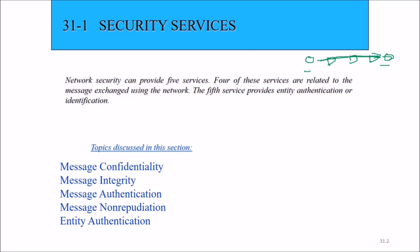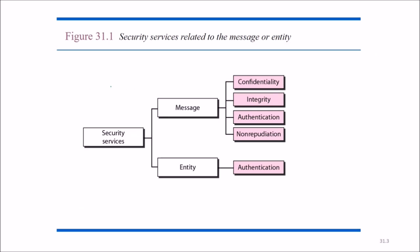Network security comprises various services which ensure how to verify or arrange that this content is not available to anyone. And even if it is available, they may not be able to hamper or create a security compromise situation. Four of these services are related to message exchanging over a network, and the fifth service is related to entity authentication and identification.